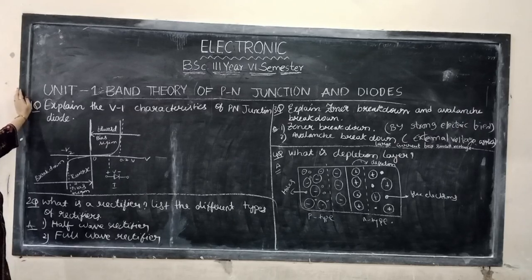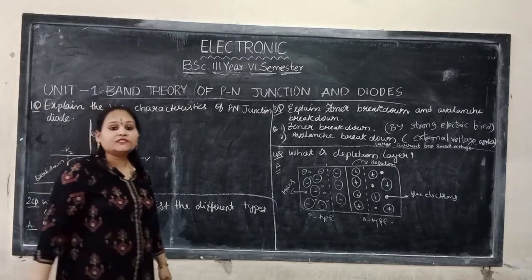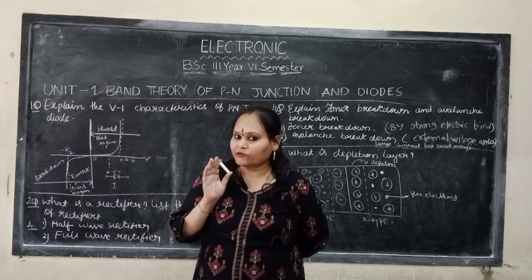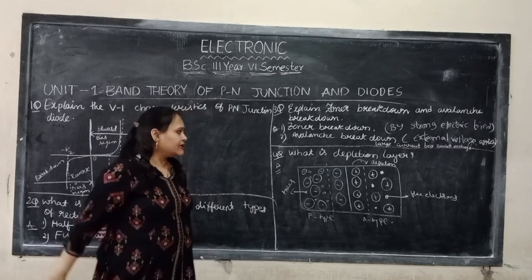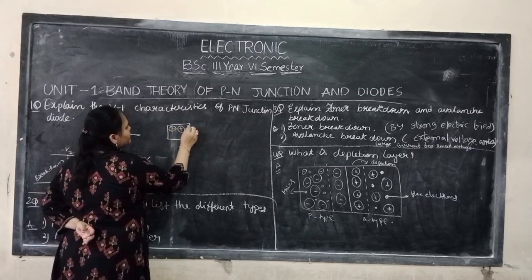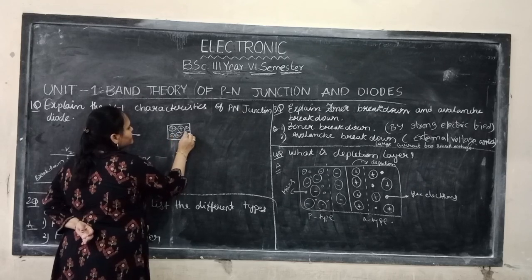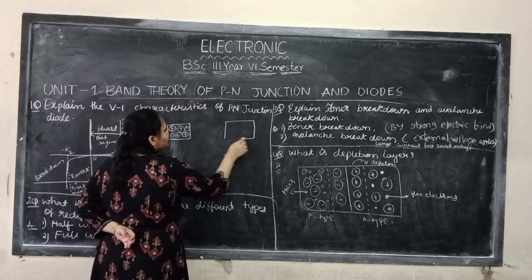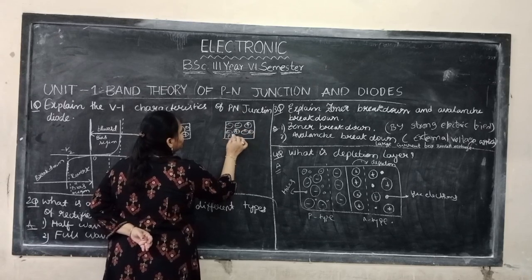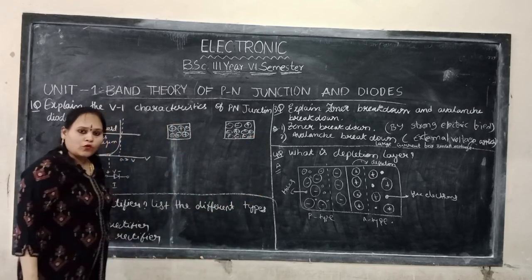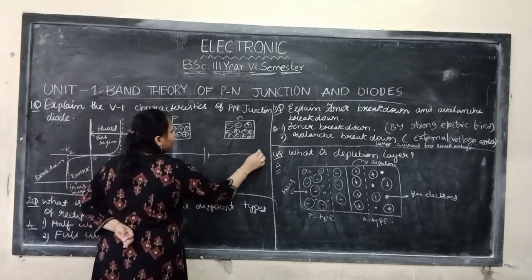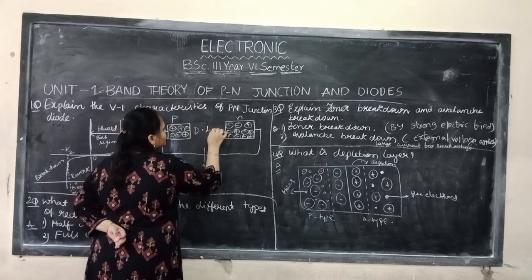I will explain the characteristics of PN junction diode. This diode is formed by combination of P-type and N-type material. We have three type materials combined to form a PN junction. This is the depletion layer.